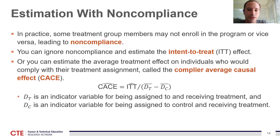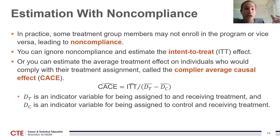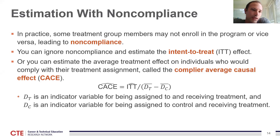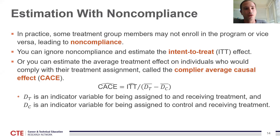The alternative is to use an instrumental variables (IV) approach, where the random assignment serves as a valid instrument for treatment status because it's random and affects the probability of receiving treatment. This gives you a local average treatment effect — the treatment effect for those who are affected by the random assignment.